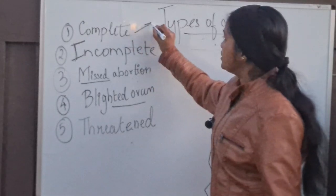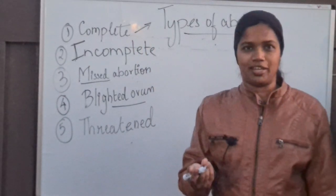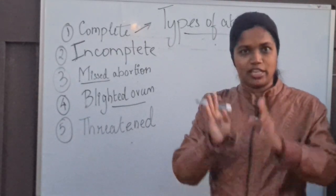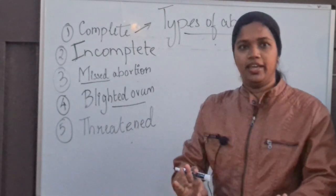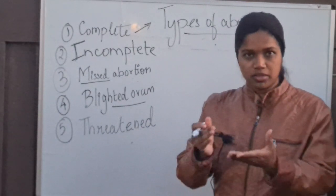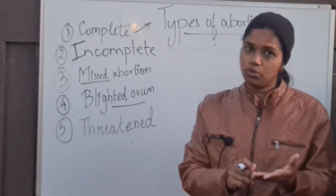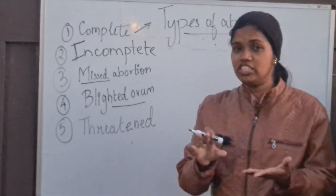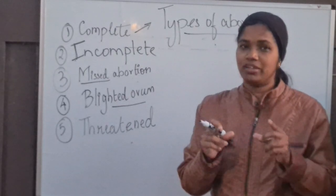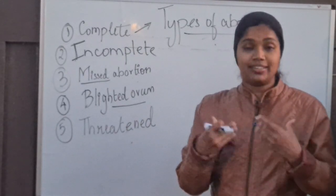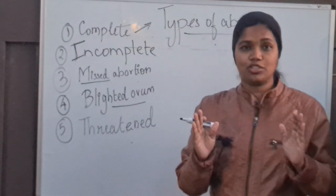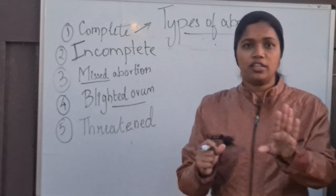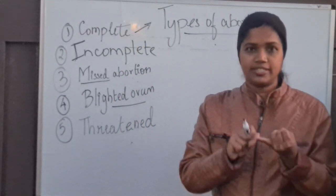The first one is complete abortion. A complete abortion means that whatever products are present inside the uterus have been completely expelled out by the body. The patient will report that she was pregnant but had very severe bleeding along with clots. In USMLE, when they mention clots, it indicates severe bleeding. In complete abortion, once the ultrasound is done, the uterus is clear and the cervix is also closed.